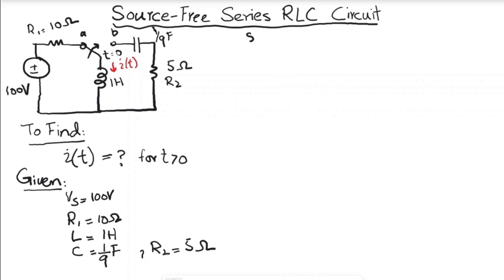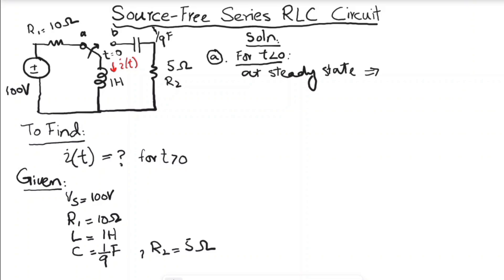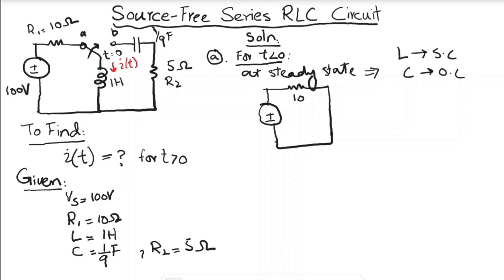When t is less than zero, the switch is connected to terminal A and the circuit is complete. At steady state, the inductor behaves as a short circuit and the capacitor behaves as an open circuit. Since the switch is not connected to terminal B, the capacitor is out of the circuit. We redraw the circuit replacing the inductor with a short circuit, leaving R1 = 10 ohms and the voltage source Vs.